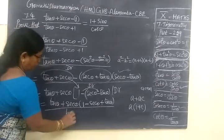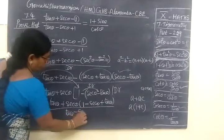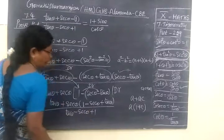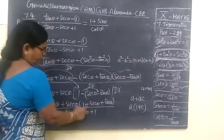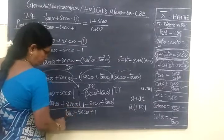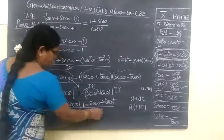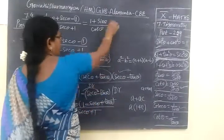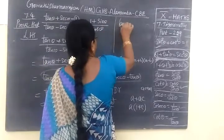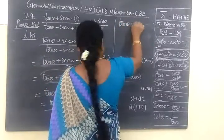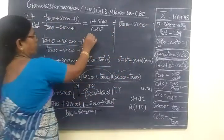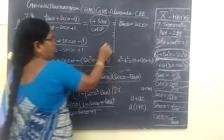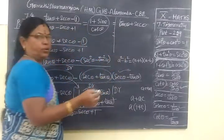So tan θ - sec θ + 1. This will be cancelled. This will be cancelled. So we write the remaining tan θ + sec θ. Then tan θ. So this will be cancelled. So we write the remaining tan θ + sec θ.